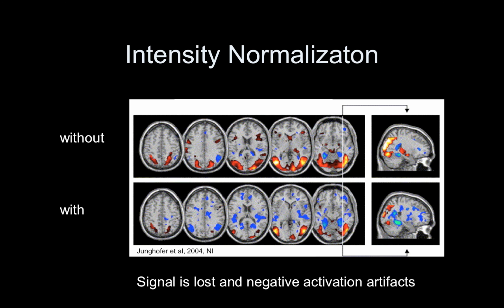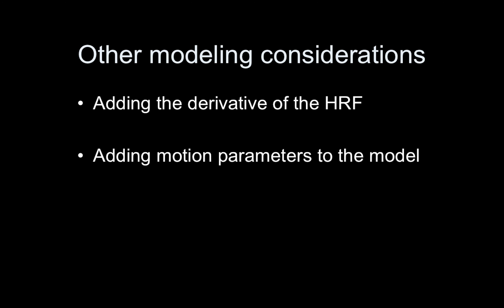Here is a paper from 2004. The top panel shows results without this type of scaling and the bottom is with it. Two things happen: the positive activation shown in red is diminished, and negative blobs pop up — some quite strong — which doesn't make sense. It's artificially changing the results in a non-meaningful way. So for task fMRI, intensity normalization is never used. For resting state it is used, though it's still debatable. Intensity normalization or global signal regression is not something you would do with task-based fMRI.